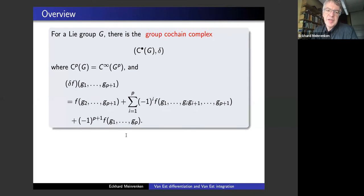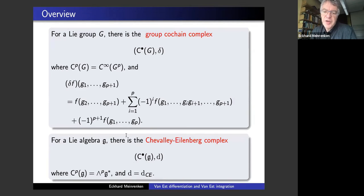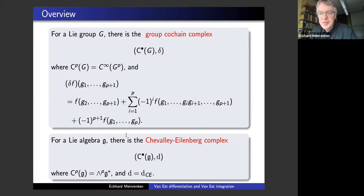There's also a Lie algebra cochain complex — the Chevalley-Eilenberg complex — where the cochains are elements of the exterior power of G star. The differential is the Chevalley-Eilenberg differential. One way to understand this complex is to identify elements of wedge of G star with left-invariant differential forms on G. Under that identification, the Chevalley-Eilenberg differential is just the de Rham differential on left-invariant differential forms.